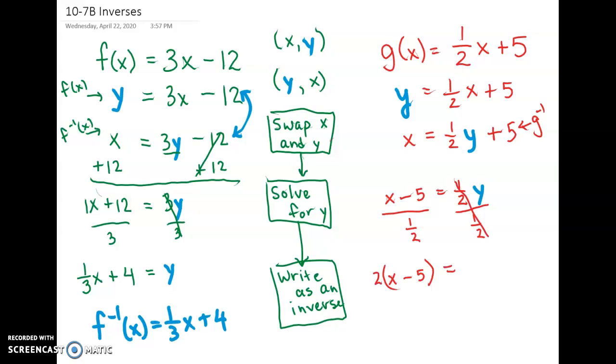The 1 half's cancel here. And we have y on that side. And now we're going to distribute that 2. So we have 2x minus 10 equals y.